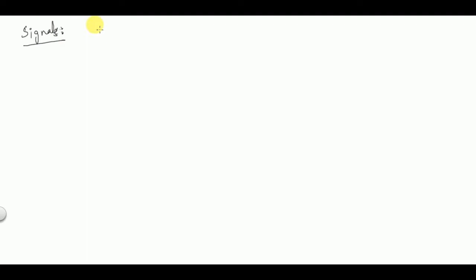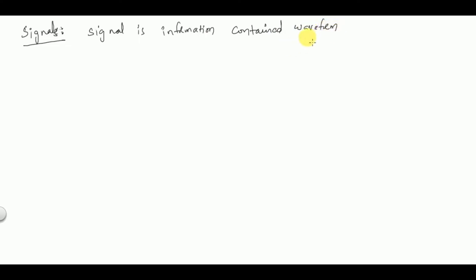So what is a signal? A signal is an information-contained waveform. If you generally represent any waveform, it is just called a waveform. But if that waveform contains some information to be conveyed, then that waveform is called a signal. That is the basic difference between a signal and a waveform.